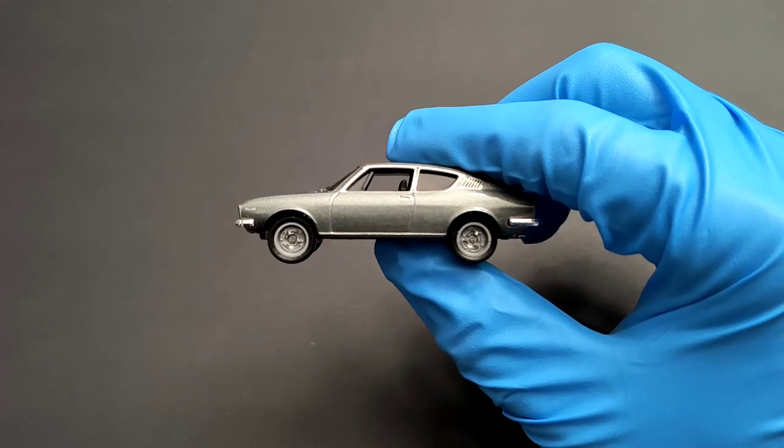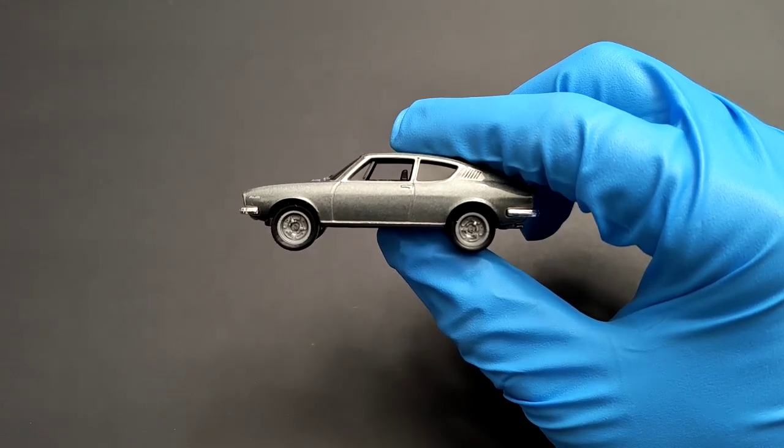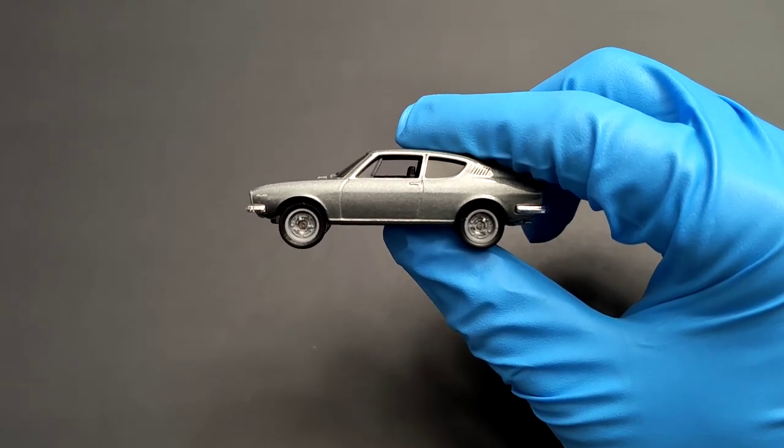passenger side, you can see again the chrome bumpers front and back from the side. You can see Audi written here.